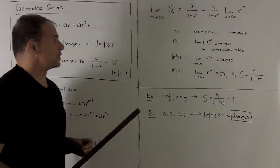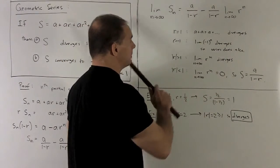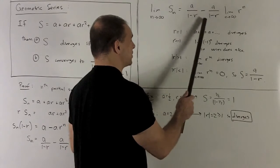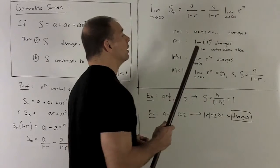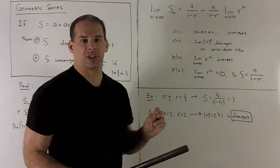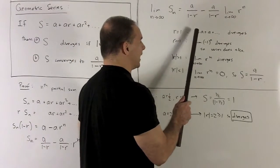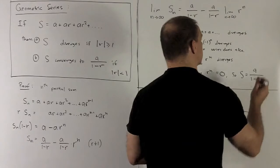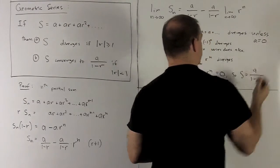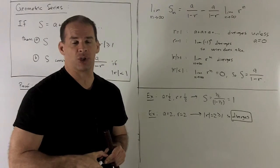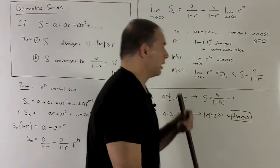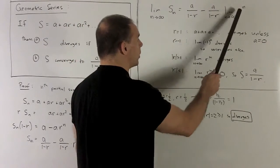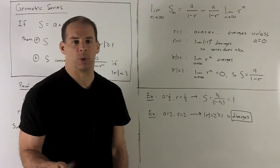Let's take the limit. This is a constant, this is a constant, so the only thing the limit's going to hit is r to the n. We had to split out the r equals one case: if r equals one, then we're just taking a and adding it to itself over and over again, so that's going to diverge unless a is equal to zero. For r equal to minus one, that's going to be minus one to the n, which diverges because it just oscillates back and forth between one and minus one.